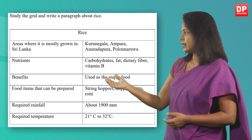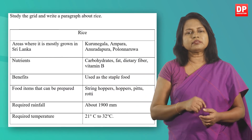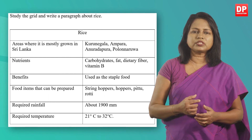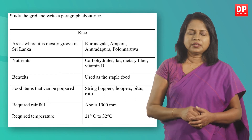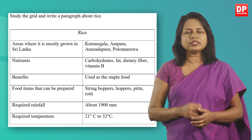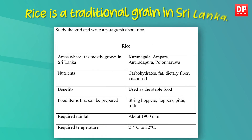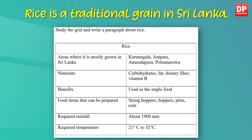Okay children, now let's write a paragraph. This is activity 4 on page 84 of your textbook. You have to make use of the information given and write a paragraph about our traditional grain, rice. You can start your paragraph with this topic sentence: 'Rice is a traditional grain in Sri Lanka.' Okay, you can pause the video and do the activity.